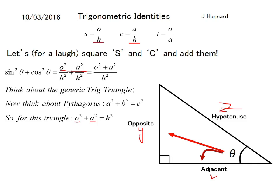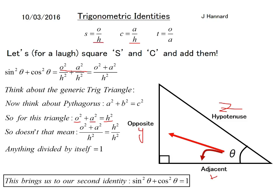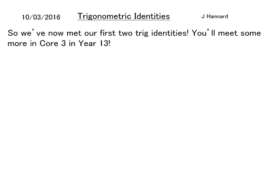If we did Pythagoras on this we'd get o squared plus a squared equals h squared. That means that our o squared plus a squared must equal h squared, and that's divided by h squared, anything divided by itself is one. So that brings us to our second identity which is any sin²θ plus cos²θ of the same theta equals one.